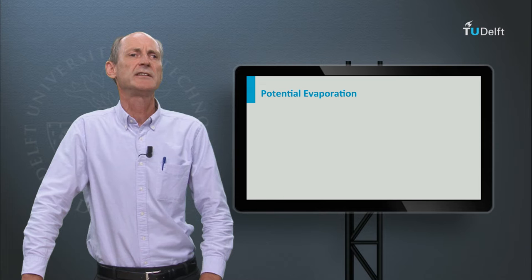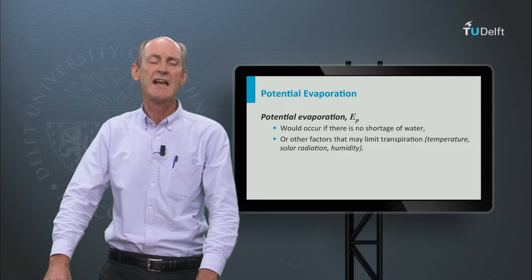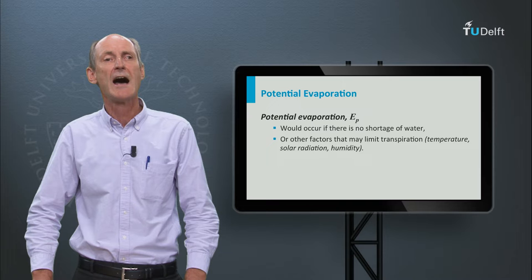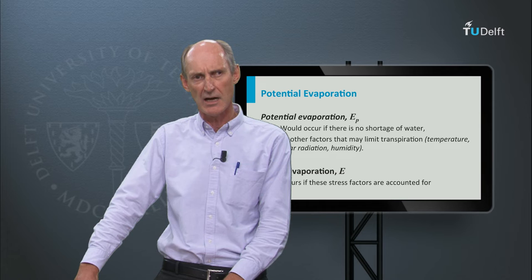Evaporation is generally constrained by the supply of moisture. If there is no moisture available, then there is nothing to evaporate. We use the term potential evaporation for evaporation where there is no shortage of water, or where there are no other limiting factors besides the availability of energy. The actual evaporation is what you get if you take all limiting factors into account.